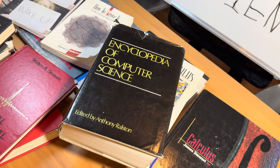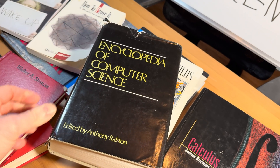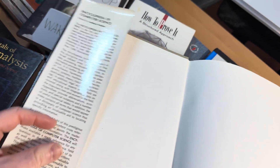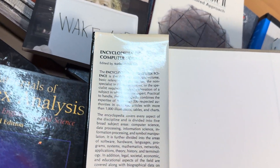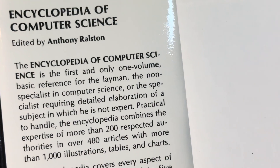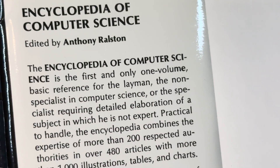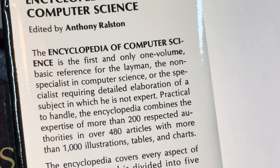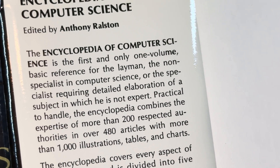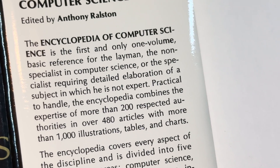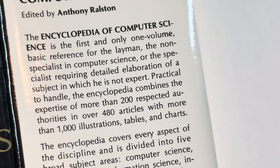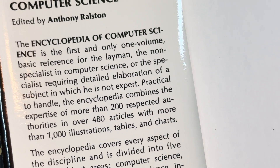So let's take a look at what's inside this book. It's an encyclopedia, so it should have everything in it — or at least a lot of information. It says: 'The Encyclopedia of Computer Science is the first and only one-volume basic reference for the layman, the non-specialist in computer science, or the specialist requiring detailed elaboration of a subject in which he is not an expert.'